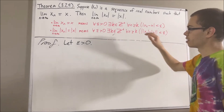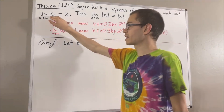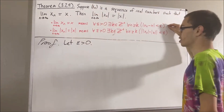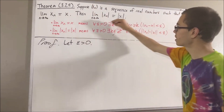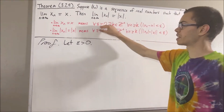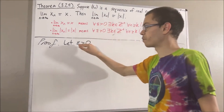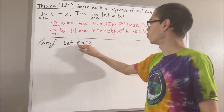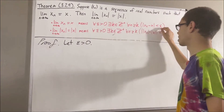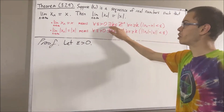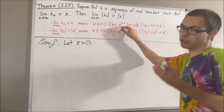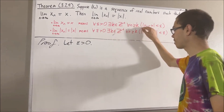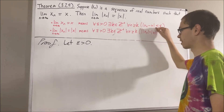Now to start, since we're given that xn converges to x, this means we know that this first statement is true. And since this statement works for every positive real number, it must work for the positive real number epsilon that we have in our proof. So taking epsilon to be the epsilon we have in our proof, we have that there is some positive integer — I'll call it p — such that for all positive integers n greater than or equal to p, the absolute value of xn minus x is less than epsilon.